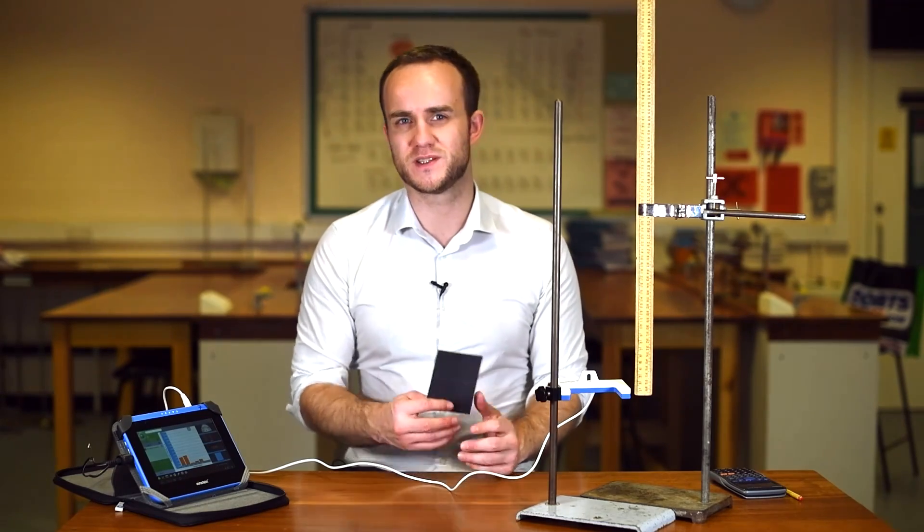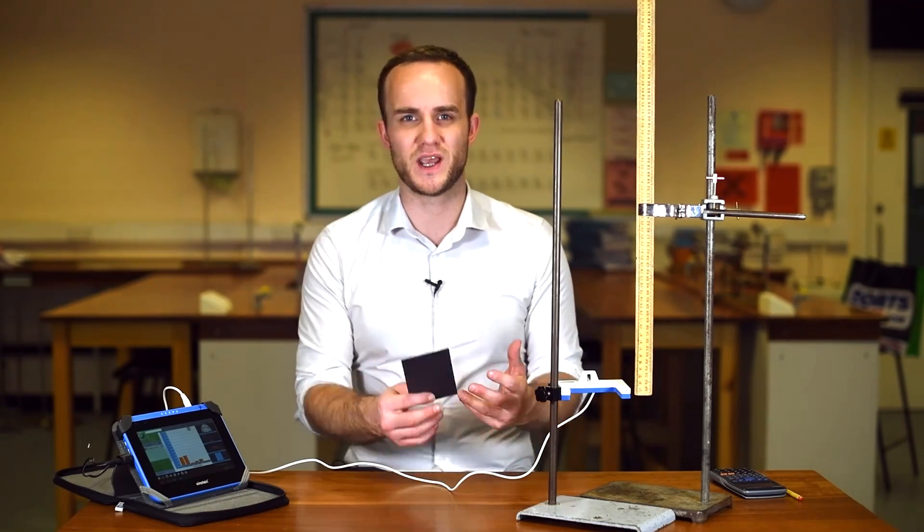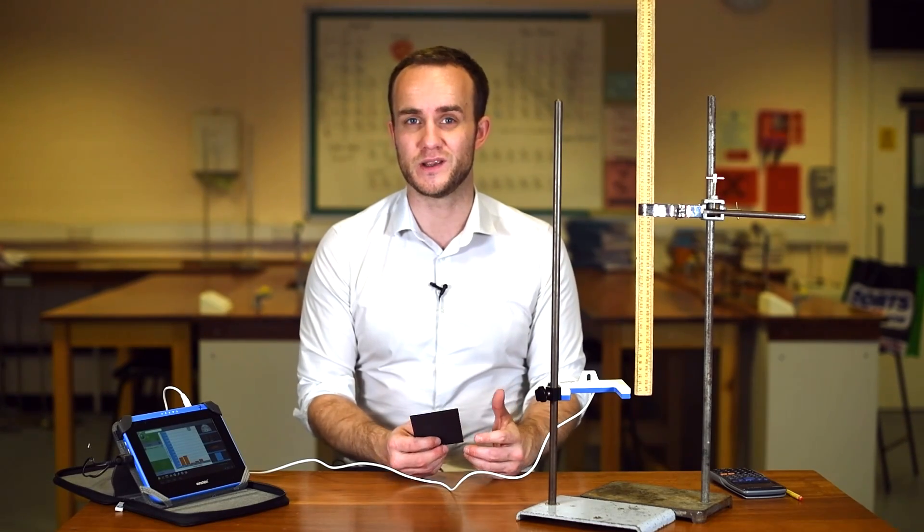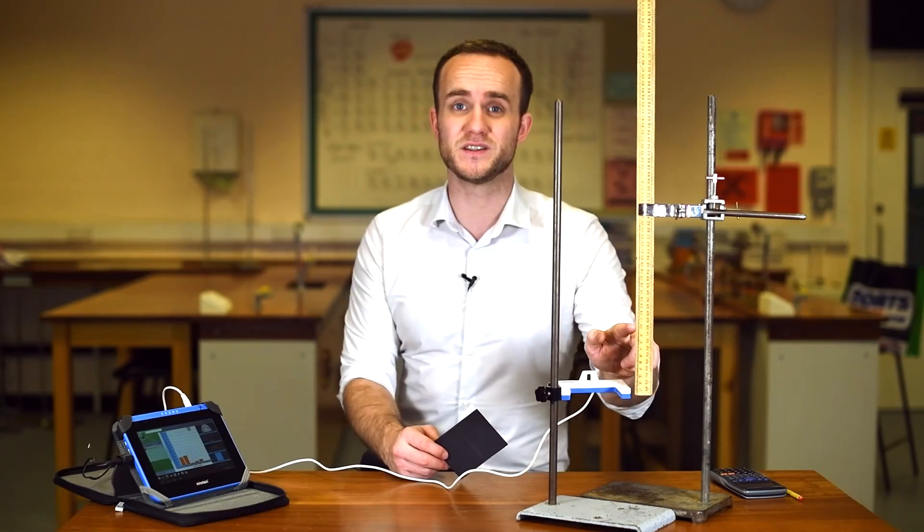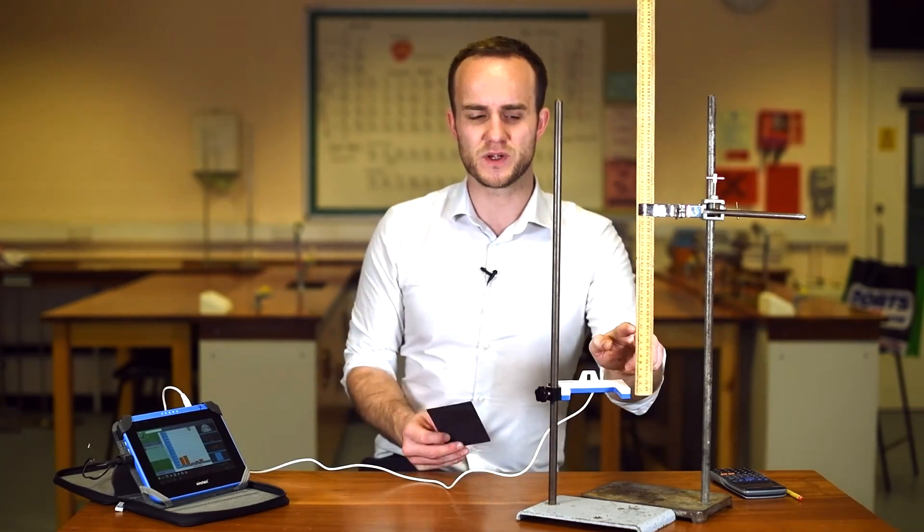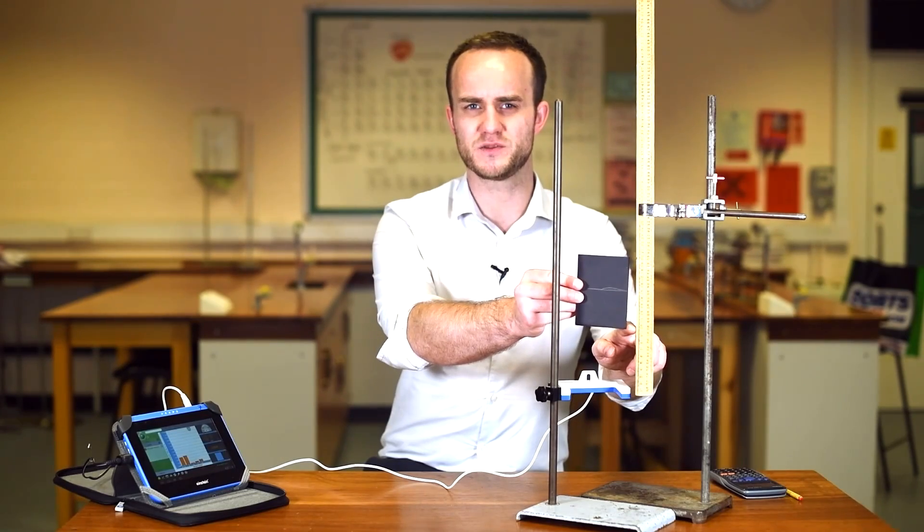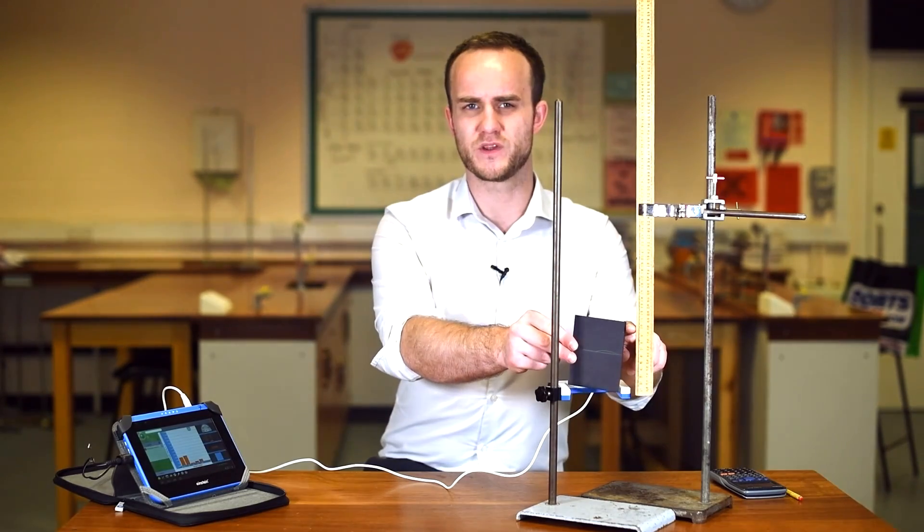So we're going to be dropping this from 10 centimeters up to, well we're going to see how high we can go while still getting the card through. The higher you go, the harder it is to hit the target. 10 centimeters is here but this raises a question. How am I going to line up the card? Are we going to be lining up the bottom of the card with this or the top of the card?